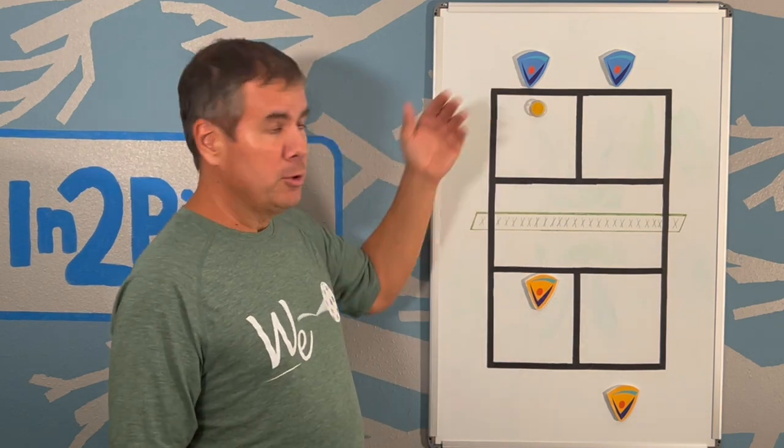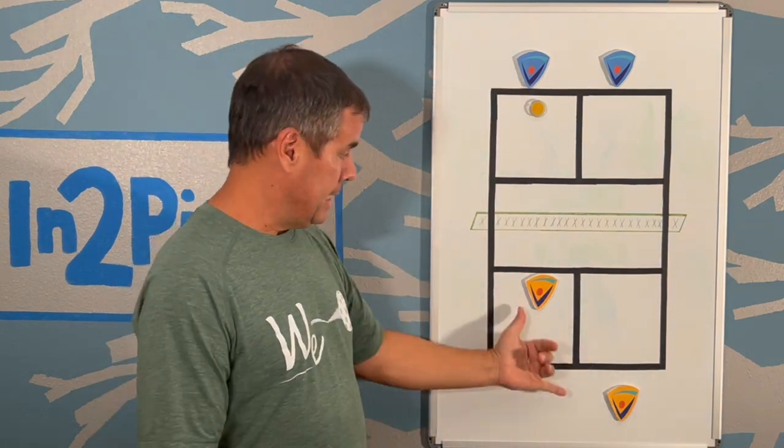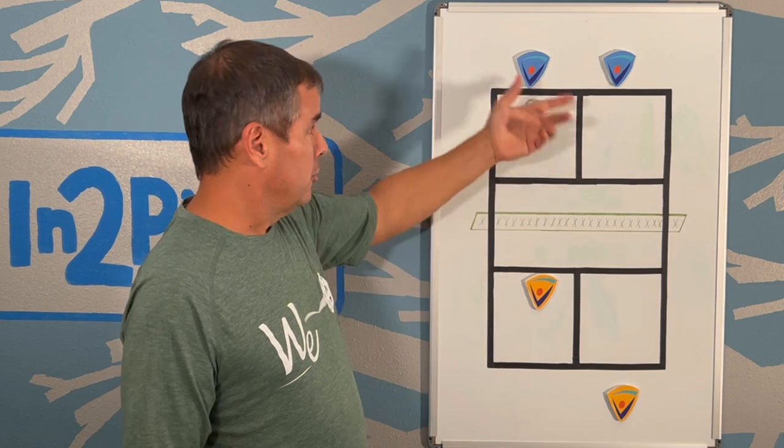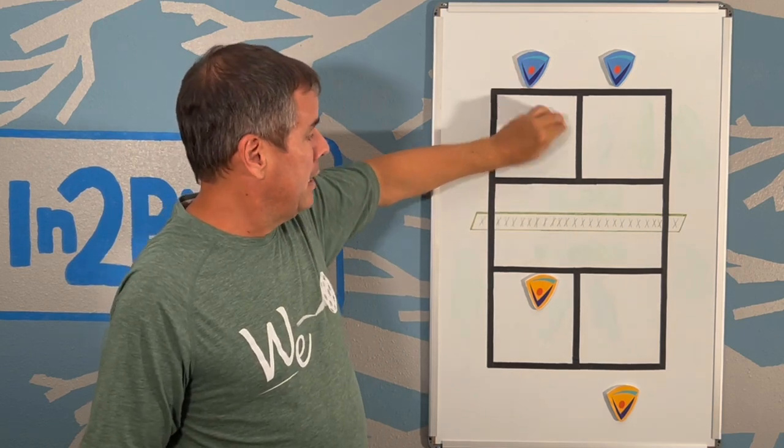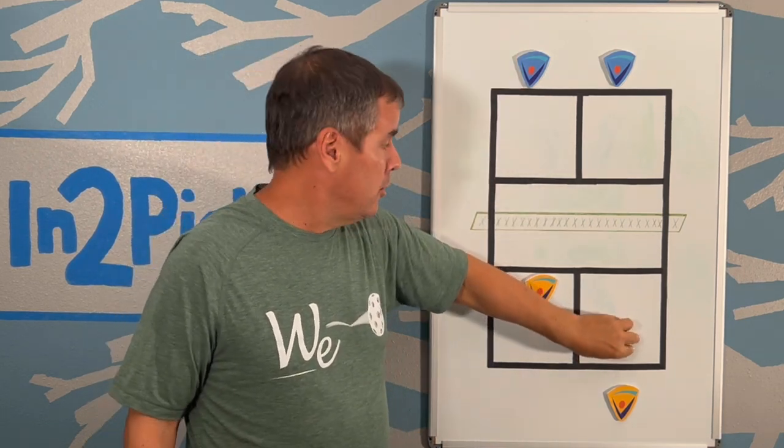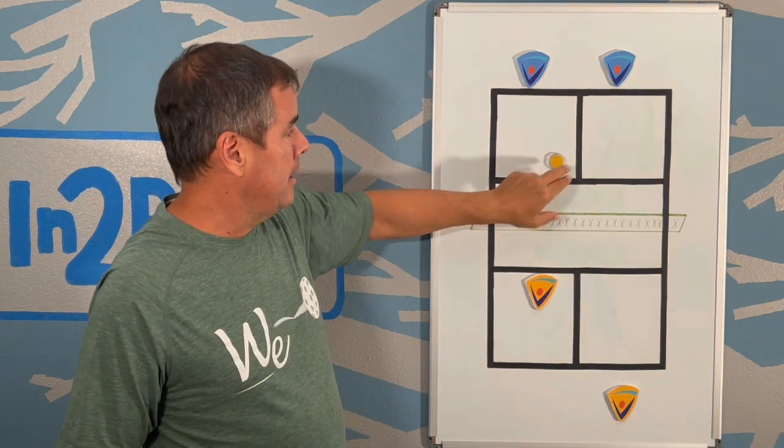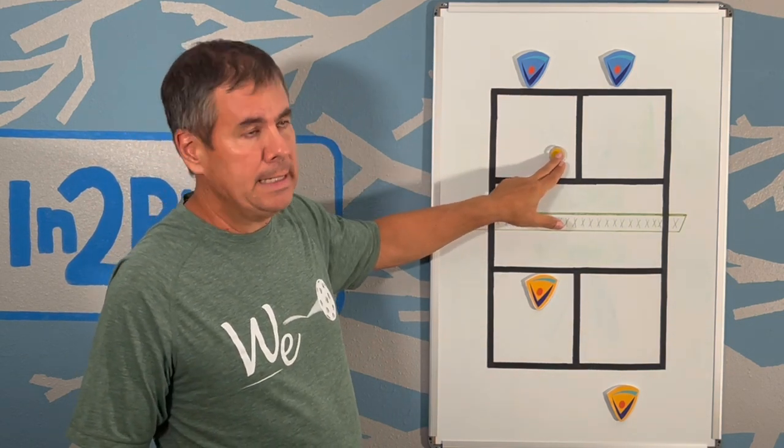So basically we have the blue team up here is the serve team. The yellow team is the return team here or the receiving team. What will happen is you'll have the serve here and then you'll have the return coming back across like this. So we're going to have a short return of serve in this case.